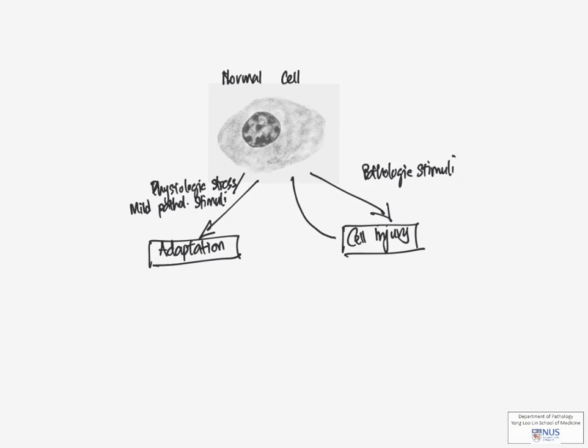So cell injury initially can be reversible, and once the stimuli are removed, it can revert back to a normal cell, structurally and functionally. However, if the stimulus is severe, it can progress to irreversible injury and cell death.